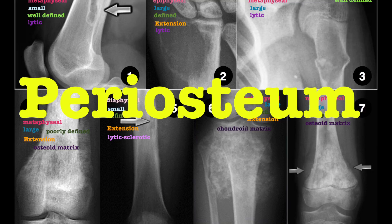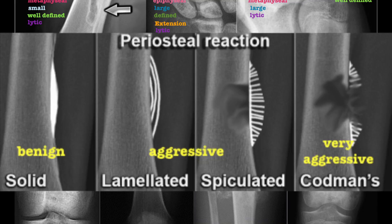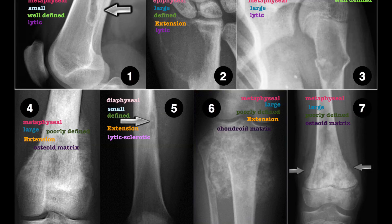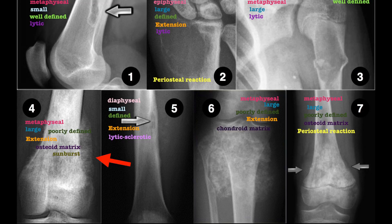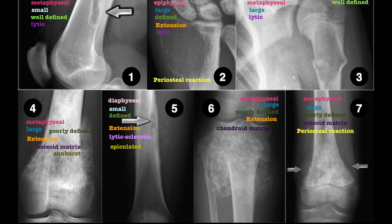P stands for Periosteum. The periosteum can appear solid, which suggests a slow-growing benign process; laminated or onion-peeling, which is typical of Ewing sarcomas; or it may have a sunburst appearance, suggesting an aggressive process such as osteosarcoma. The presence of a Codman's triangle suggests a very aggressive malignant process, also seen in osteosarcomas. A periosteal reaction is seen in figures 2 and 7. A sunburst appearance is seen in figure 4. There is also a spiculated periosteal reaction in figure 5, and a characteristic radiological feature of tumour 5 is usually onion peeling.